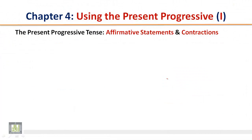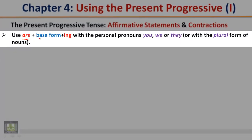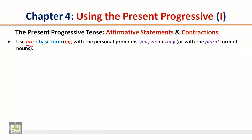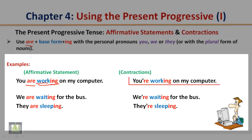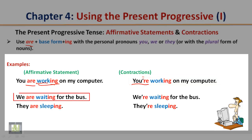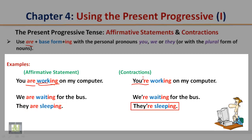The present progressive tense: affirmative statements and contractions. Use are plus base form plus -ing with the personal pronouns you, we, or they, or with the plural form of nouns. Examples — Affirmative statement: You are working on my computer. 'Work' is the base form plus -ing. Contraction: You're working on my computer — notice the apostrophe and then 're.' Affirmative statement: We are waiting for the bus. Contraction: We're waiting for the bus. Affirmative statement: They are sleeping. Contraction: They're sleeping.